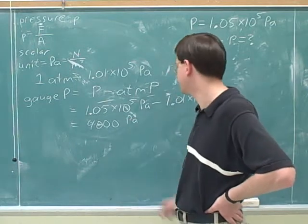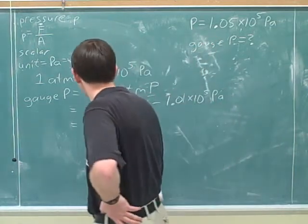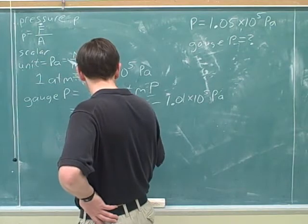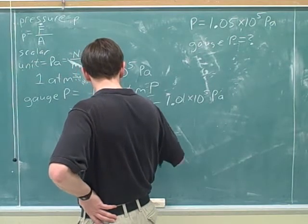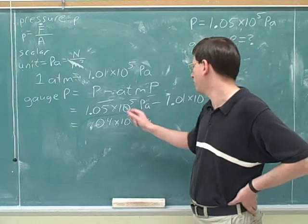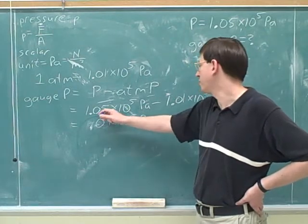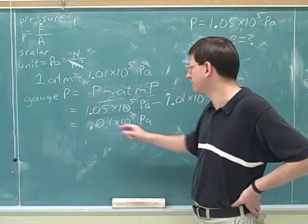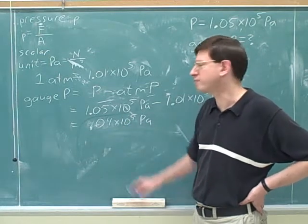That would be our gauge pressure. Without a calculator, we could just say it's 0.04 times 10 to the fifth, because 1.05 minus 1.01 is 0.04. And that gives us more intuition of what we're doing.